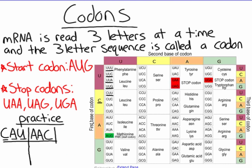Before we can talk about translation, we need to understand what a codon is. With the mRNA strand that we made in transcription, that's going to be sent into the cytoplasm. When the ribosome gets onto an mRNA strand and starts making proteins from it, it's going to read the mRNA three letters at a time. Those three letters are called a codon — it's three letters of an mRNA strand. The codons are going to be used to determine what amino acid comes next, so there's going to be a whole chain of codons that dictates what amino acid is used.